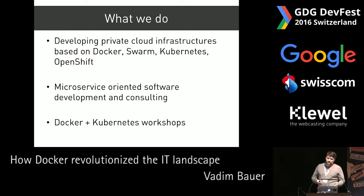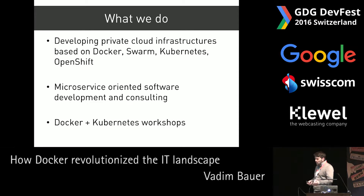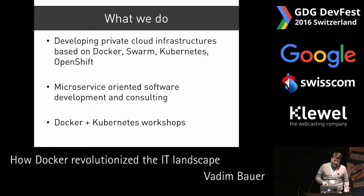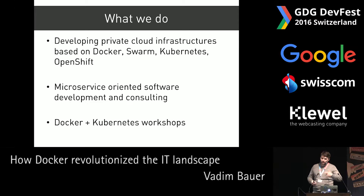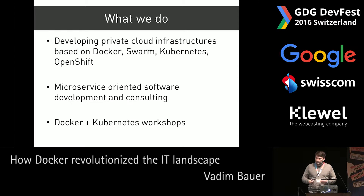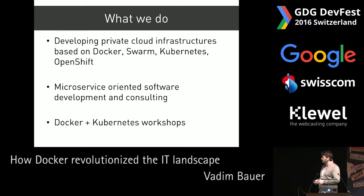Developing software and developing infrastructure is actually the same — it's both software. On one hand, it's software that produces code, produces a website, an application. On the other hand, you develop software that produces an infrastructure, which is also actually the same. You have to test it, you have to have quality assurance, you have to have a repository, you have continuous integration, continuous delivery, and all that sort of stuff.